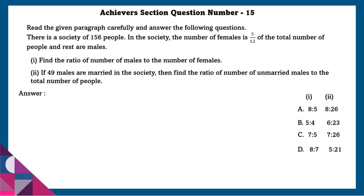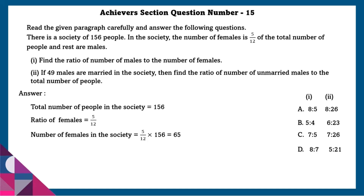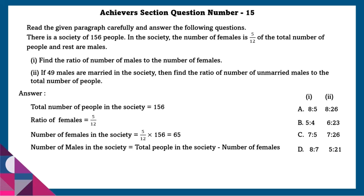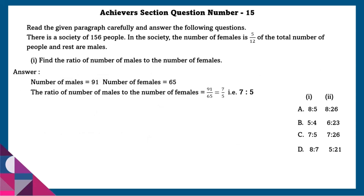Achiever section question number 15: There is a society of 156 people. The number of females is 5/12 of total people and the rest are male. Number of females equals 5/12 times 156 equals 65. Number of males equals 156 minus 65 equals 91. Ratio of males to females equals 91:65, simplified to 7:5.